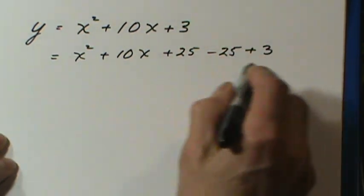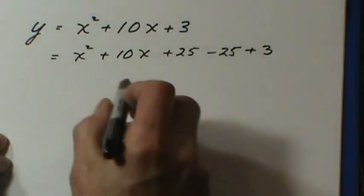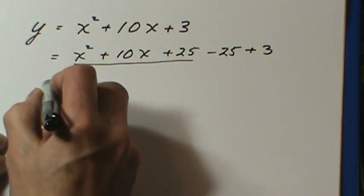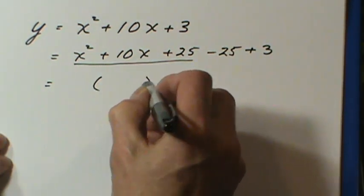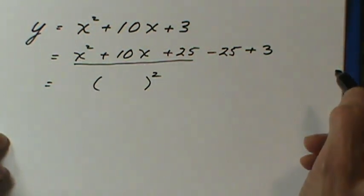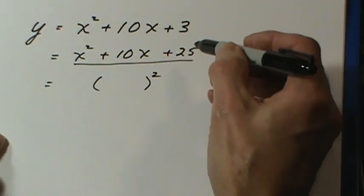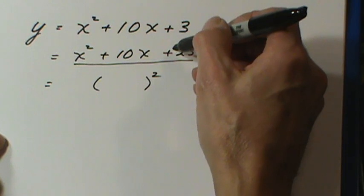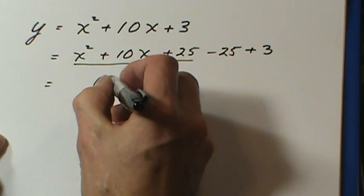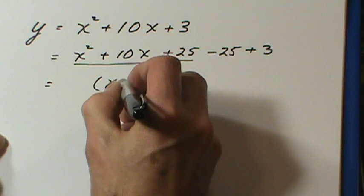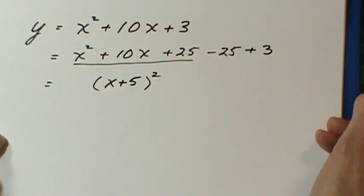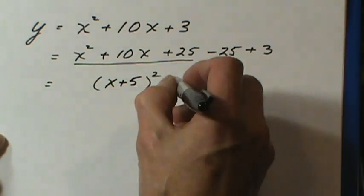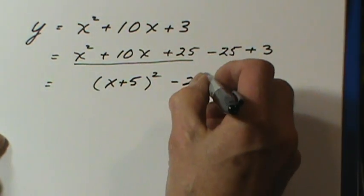That means there's no change, it's still equal to what we had up here. However, the reason for doing that is so that we can take the first three terms and write them as a perfect square. When the last sign is plus, both signs are identical. In this case, both of the brackets have a plus five in them, so we write it as x plus five squared. And the two terms on the end give us negative twenty-two.